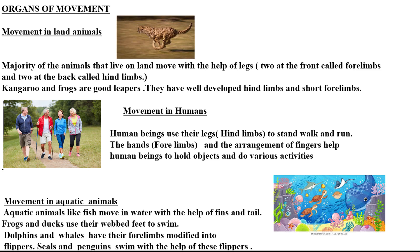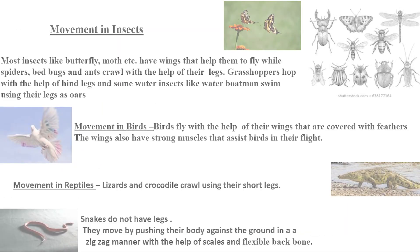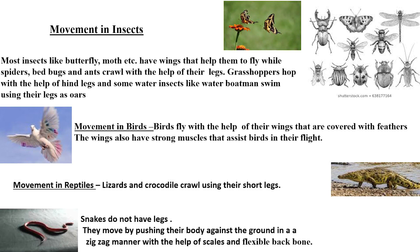Aquatic animals move with the help of fins and tails — fish swim using their fins and tail. Frogs and ducks use their webbed feet to swim. Dolphins and whales have modified forelimbs into flippers. Seals and penguins also use flippers to swim. Most insects like butterflies and moths have wings to fly, while insects like spiders, bed bugs, and ants crawl with their six legs.